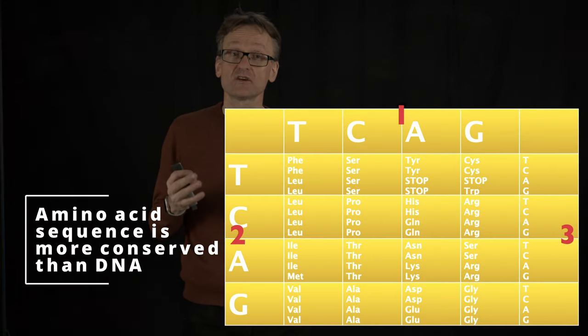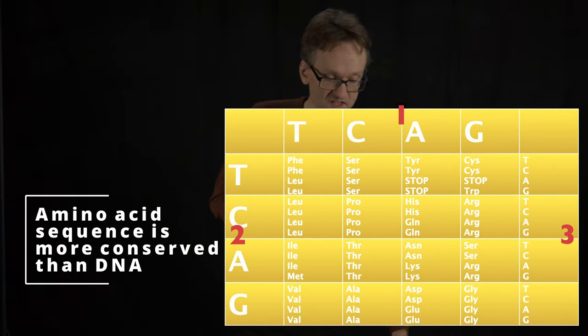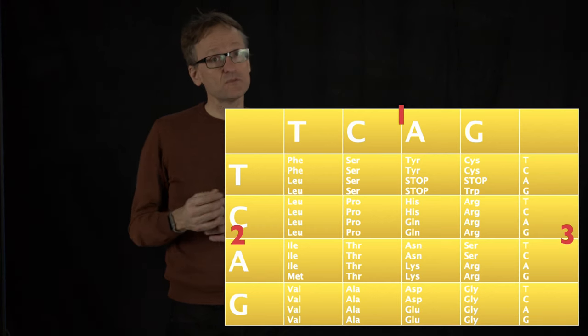So for protein structure we're going to use the genetic code. What's the advantage of this? Well it has to do with those silent mutations.